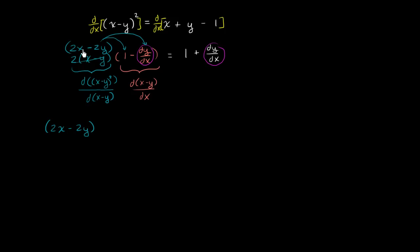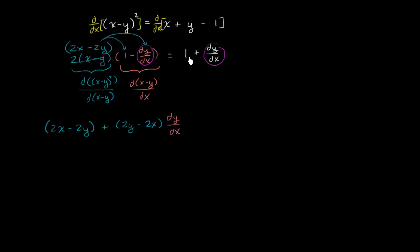And 2x minus 2y times negative dy/dx gives us negative (2x minus 2y) dy/dx, or equivalently (2y minus 2x) dy/dx. So the left side equals (2x minus 2y) plus (2y minus 2x) dy/dx, which equals 1 plus dy/dx.